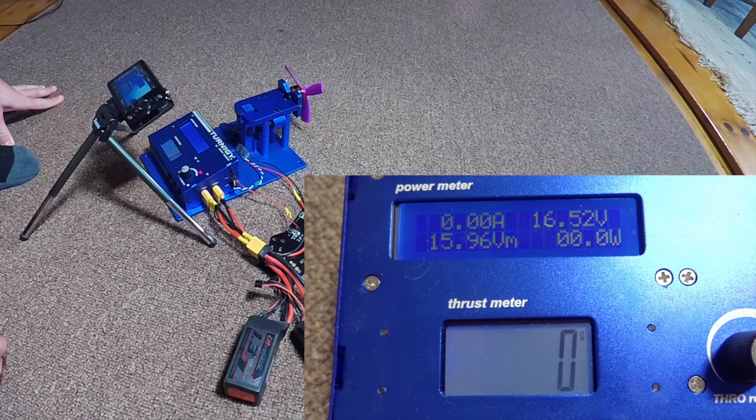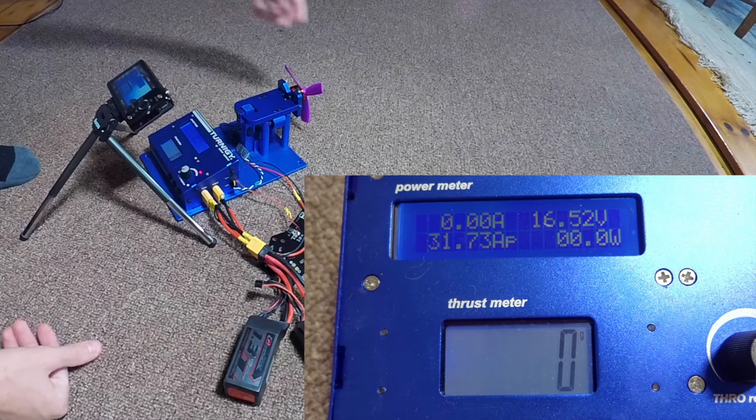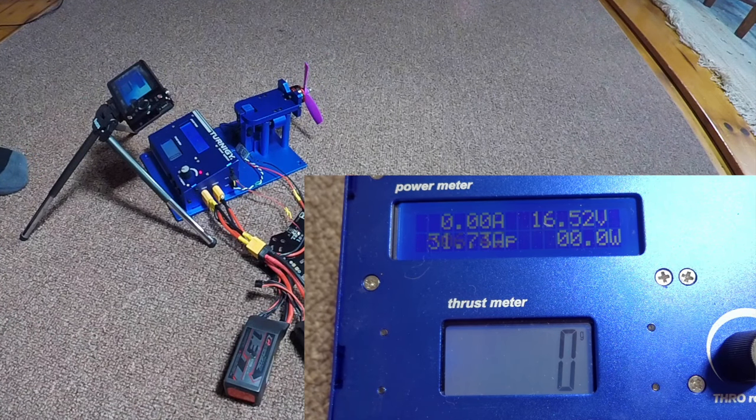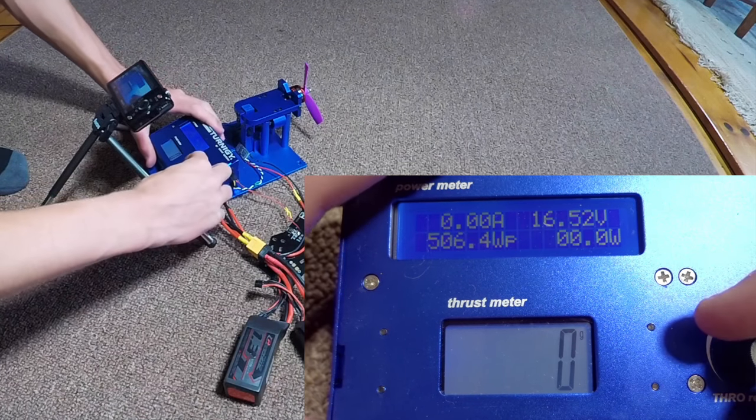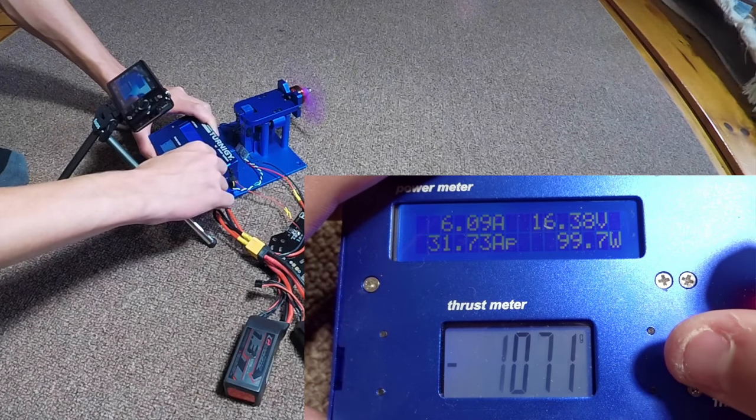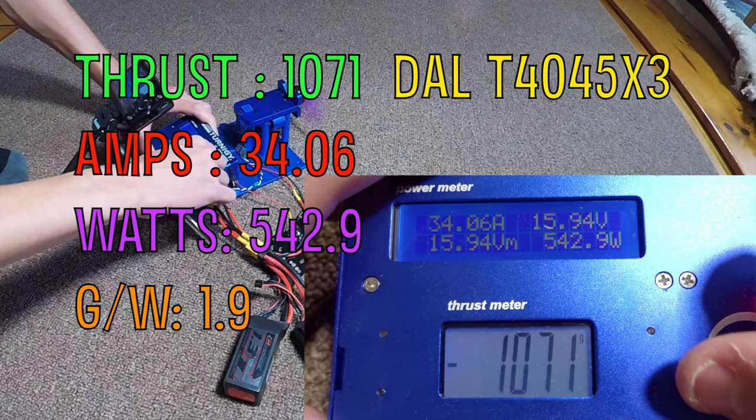Now we have the DAL T4045 Bullnose tri-blade, a four-inch prop. With the higher KV, I thought it'd be interesting to check out on a four-inch prop. Let's crank it up.